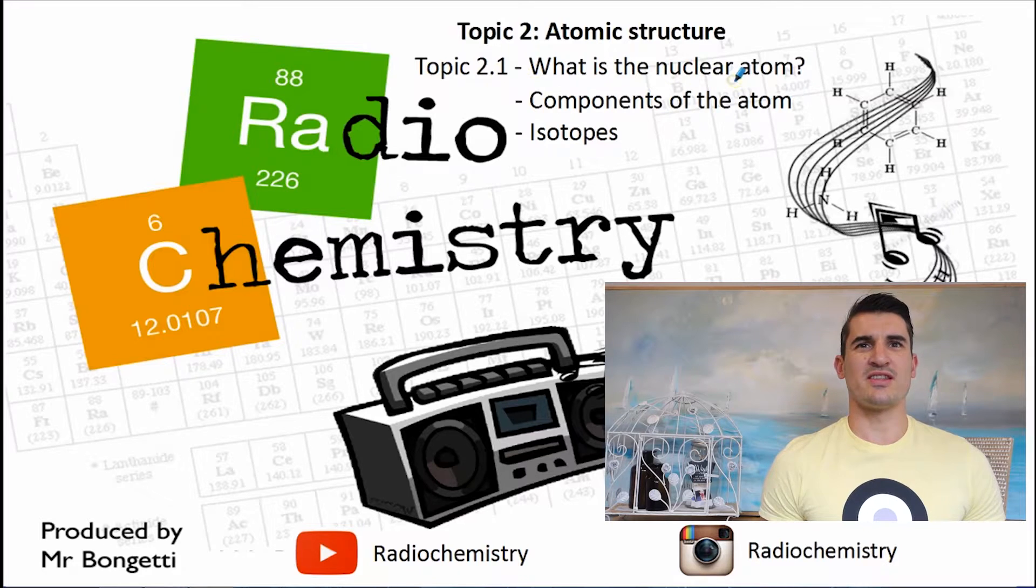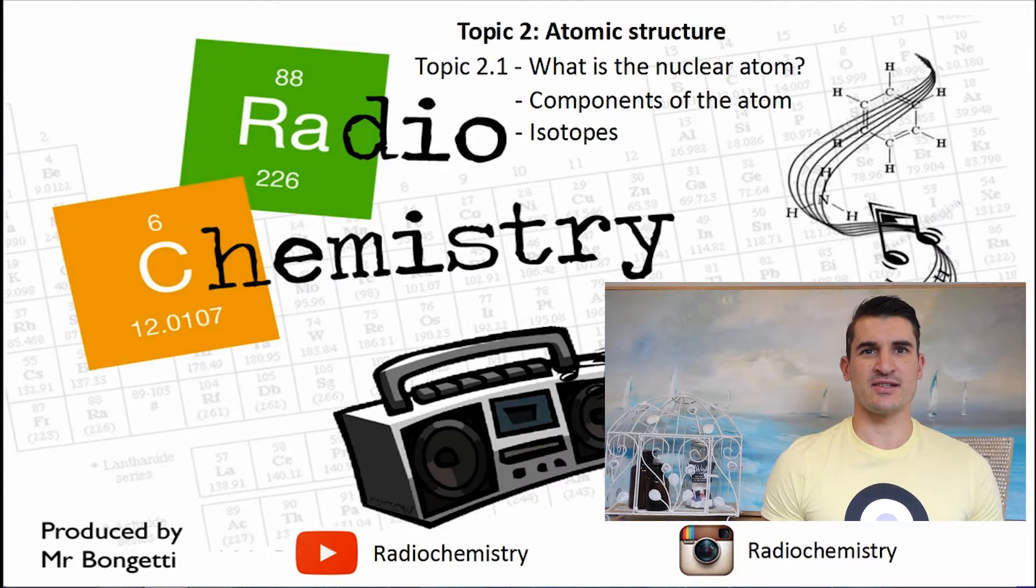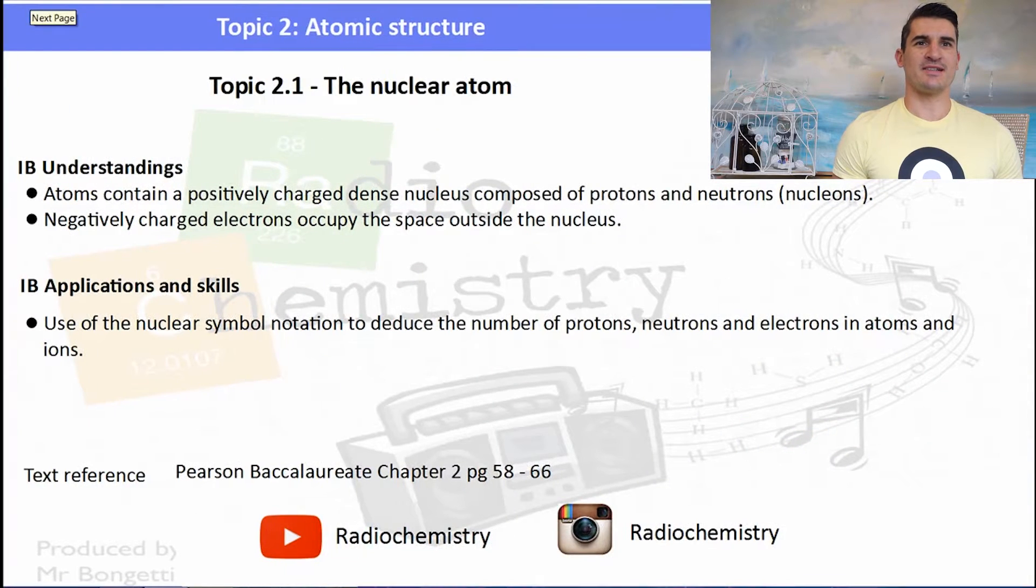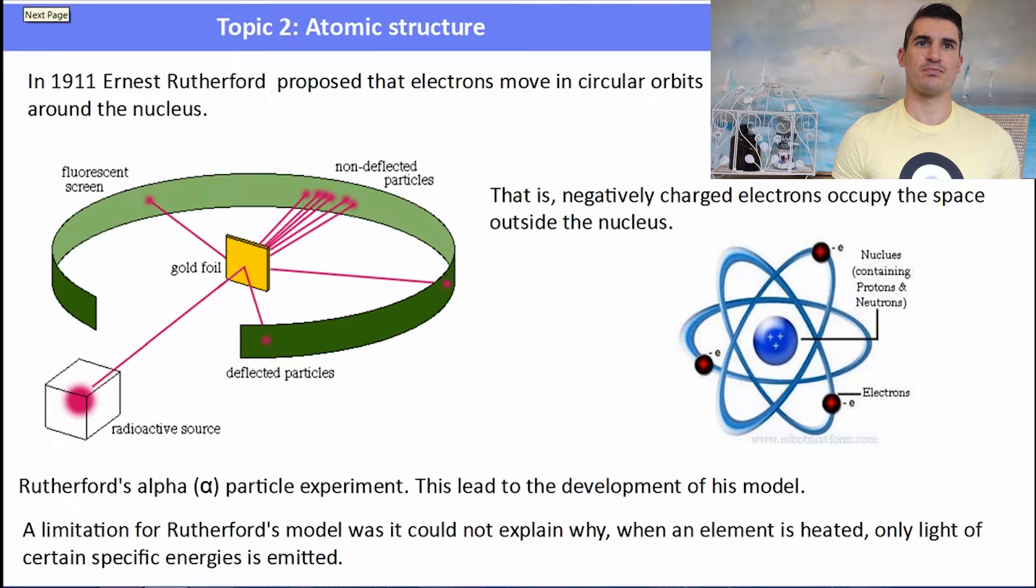Topic 2.1, what is the nuclear atom? We look at the components of an atom and we discuss isotopes. The IB understandings and applications and skills focus around atoms and what they contain. Also, we need to talk about the existence of electrons and then we need to use what we call the nucleus symbol notation to write atoms.